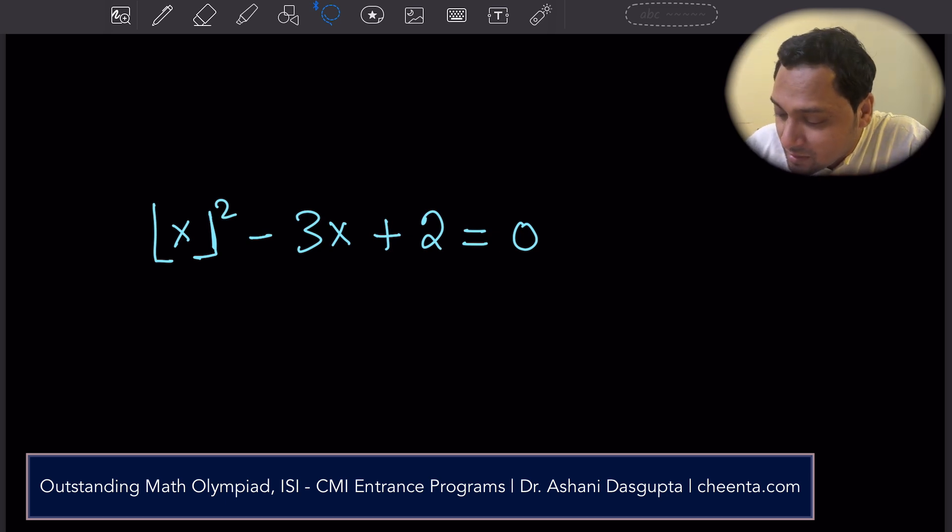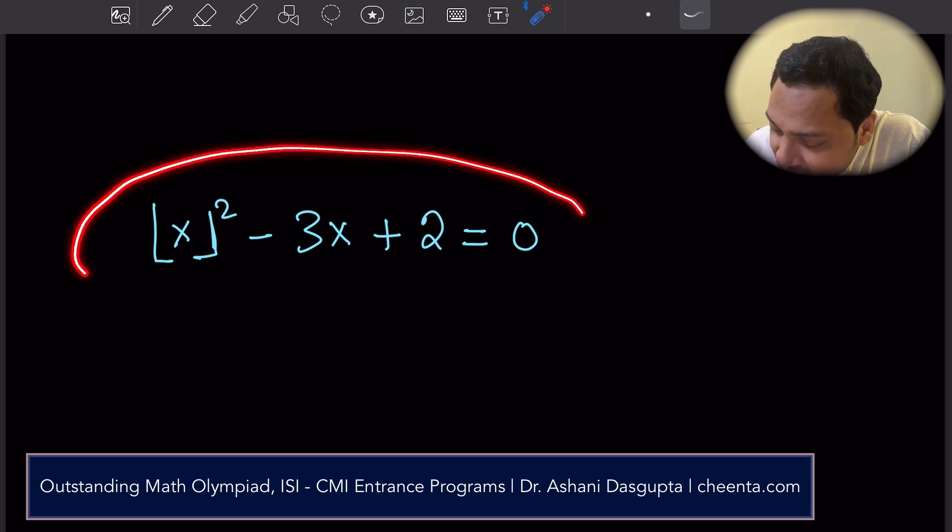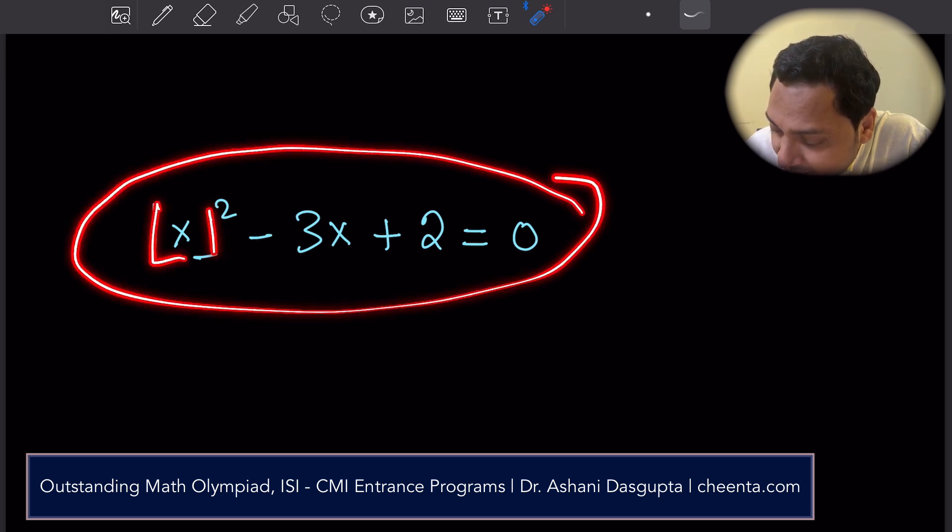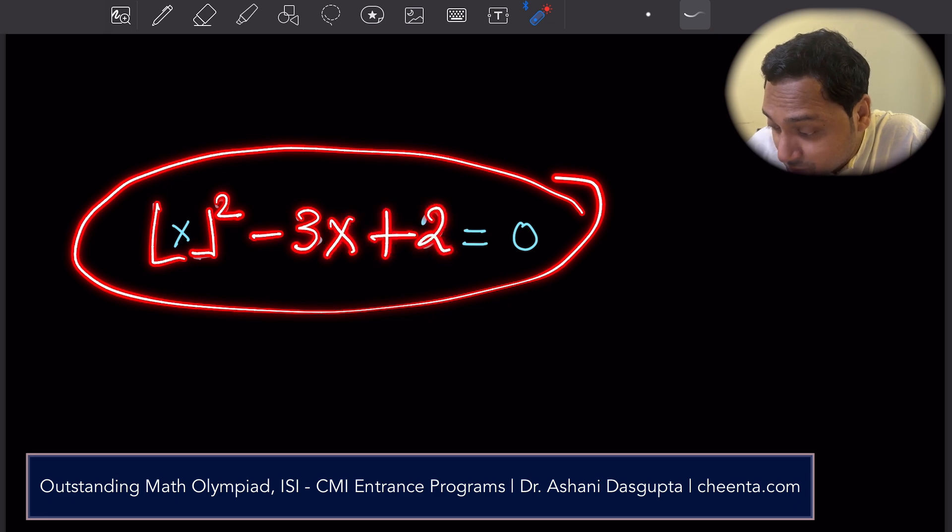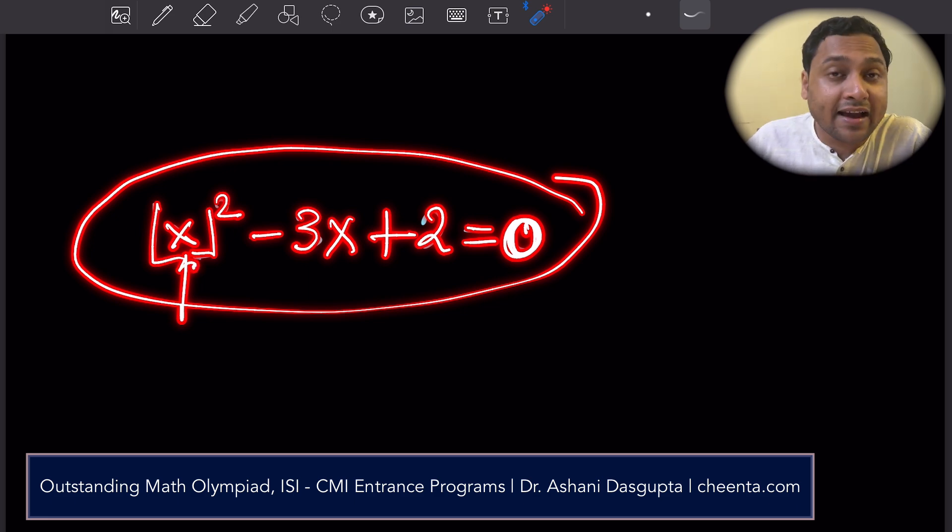So this problem from American Math Competition is actually very interesting. It says that integer part of x square minus 3x plus 2 is equal to 0. We want to find out all such values of x such that this equation holds true.